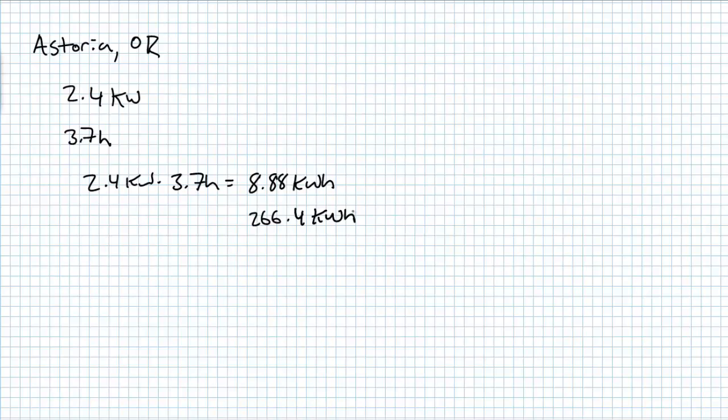If you did this for 30 days or one month, you'd end up with 266.4 kilowatt hours per month. Over the course of 365 days or one year, you expect to get 3,241.2 kilowatt hours. PV system performance is pretty easy to conceptualize when you use peak sun hours to assist you in your analysis.